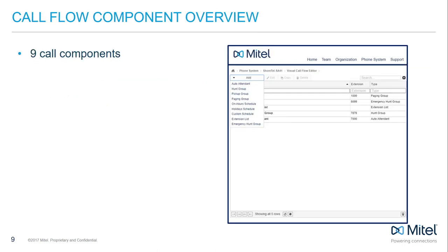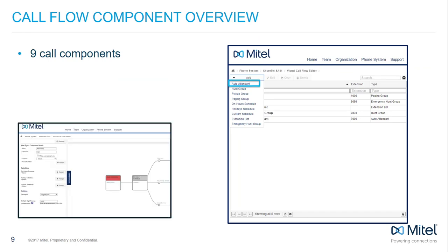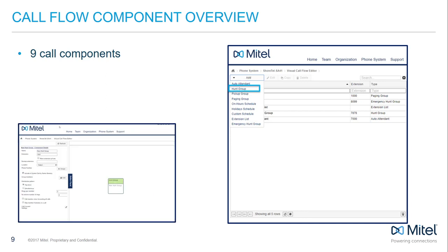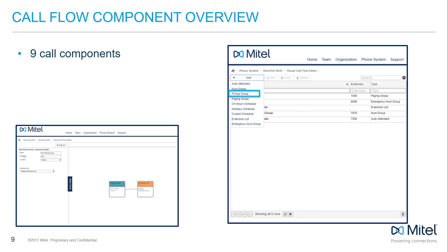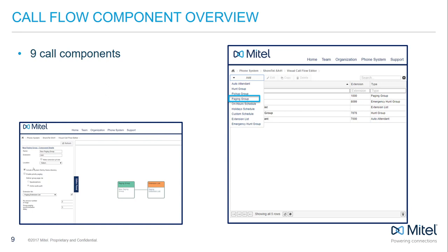There are nine Callflow Components in total. Auto Attendance allows for many routing options to be provided to the caller in an automated format. Hunt Groups allow for calls to hunt through a group or list of users to find an available person to take the call. Pickup Groups allow users at other phones to utilize a generic extension number to pick up any ringing phone within hearing range.